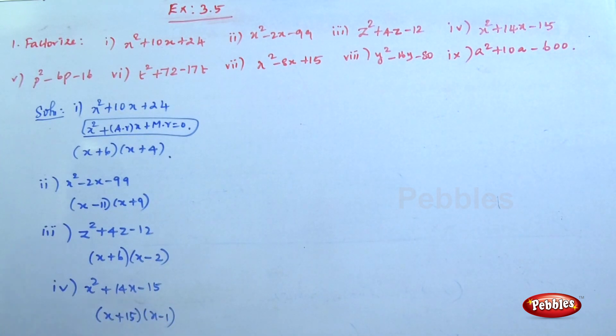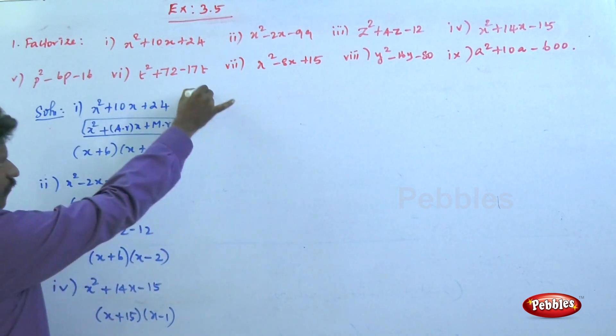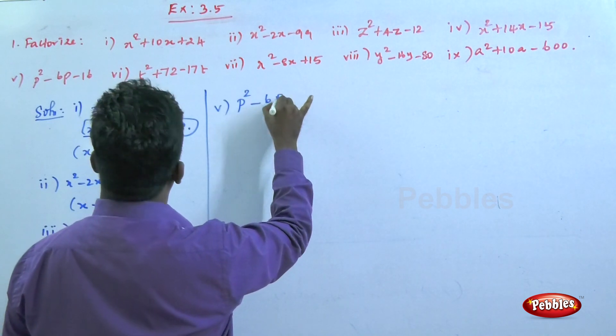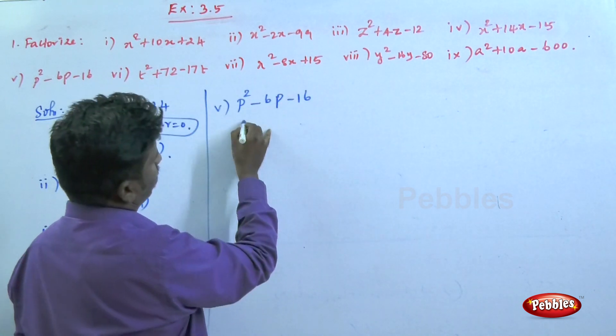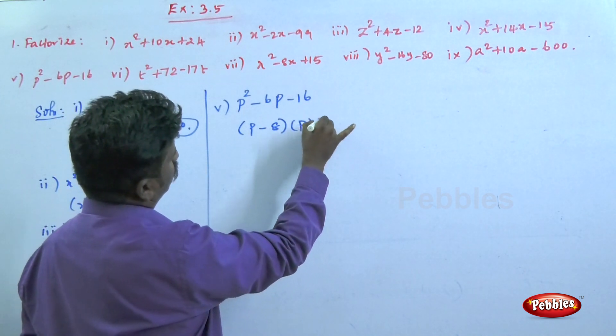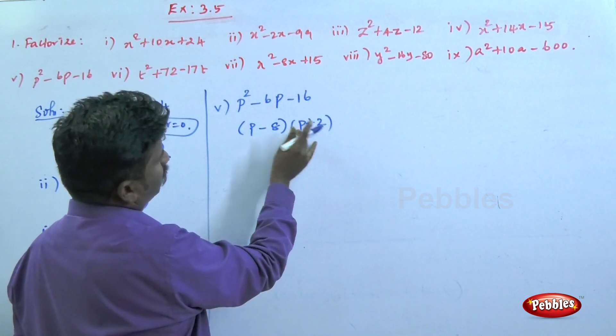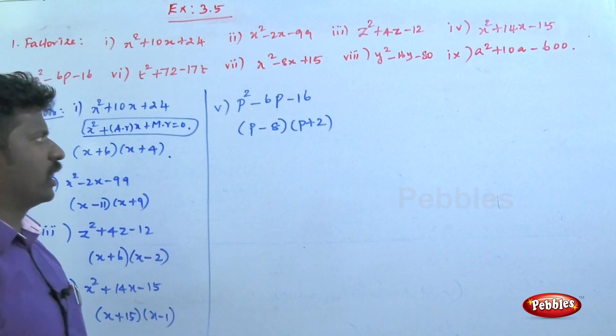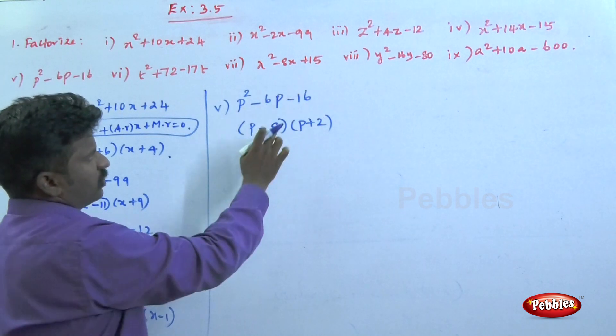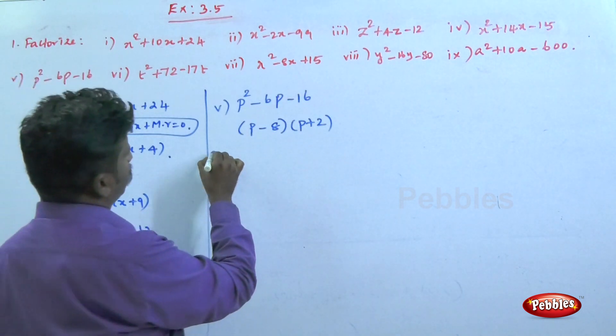Question number five: p² - 6p - 16. This can be written as (p - 8)(p + 2). -8 + 2 = -6, and the product -8 × 2 = -16. These are the factors.